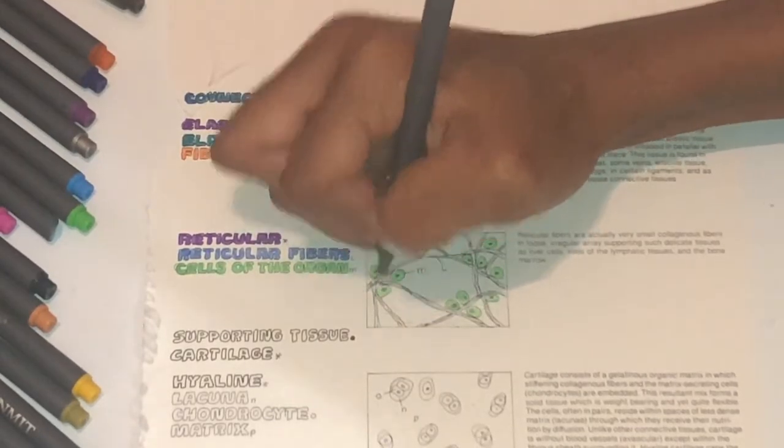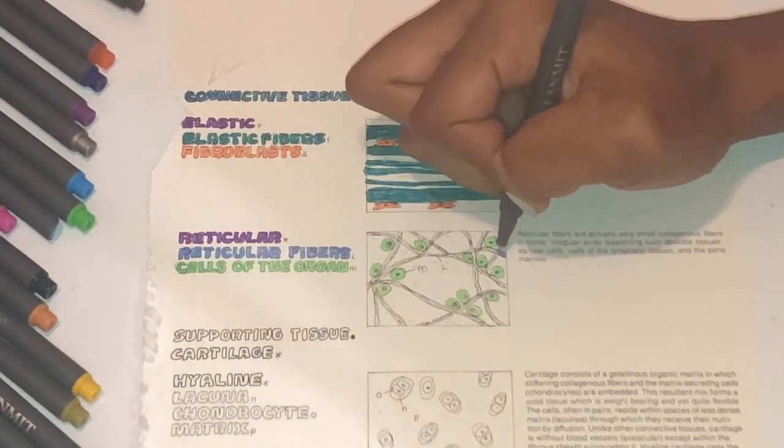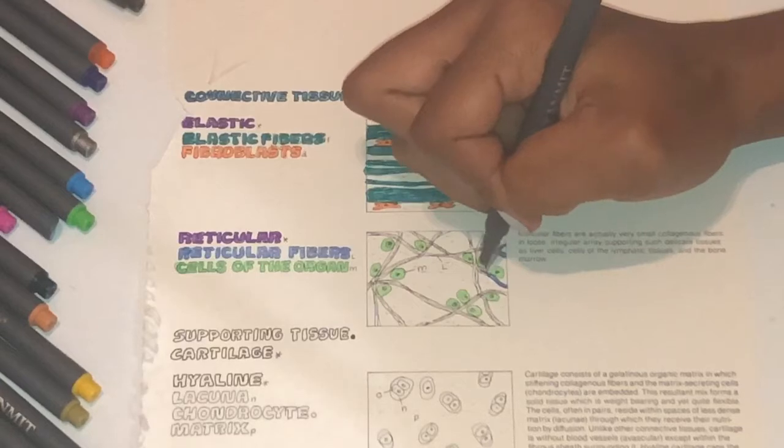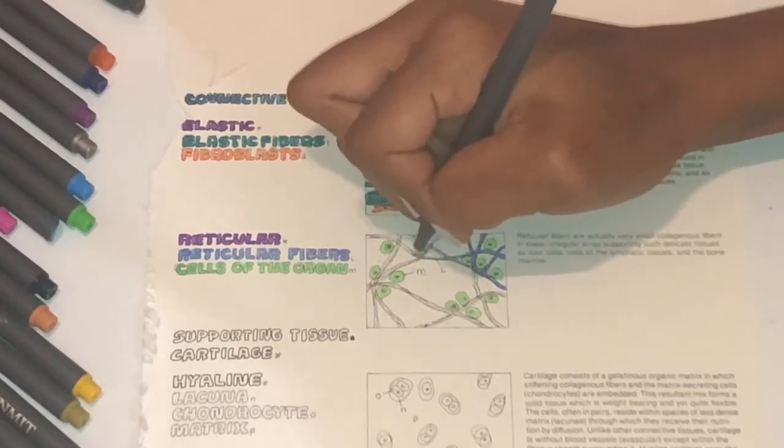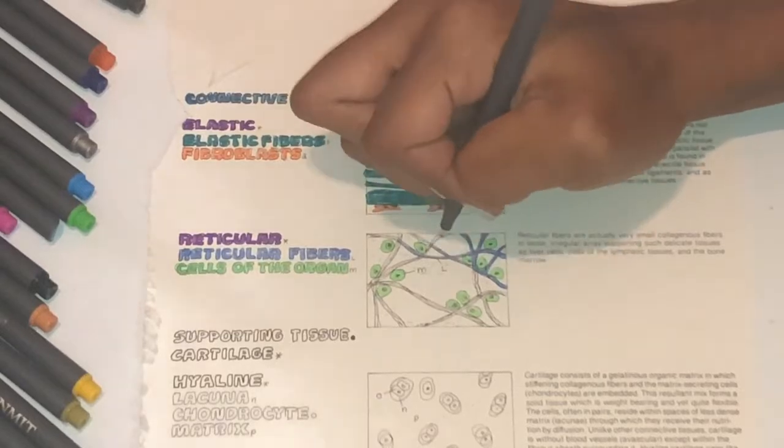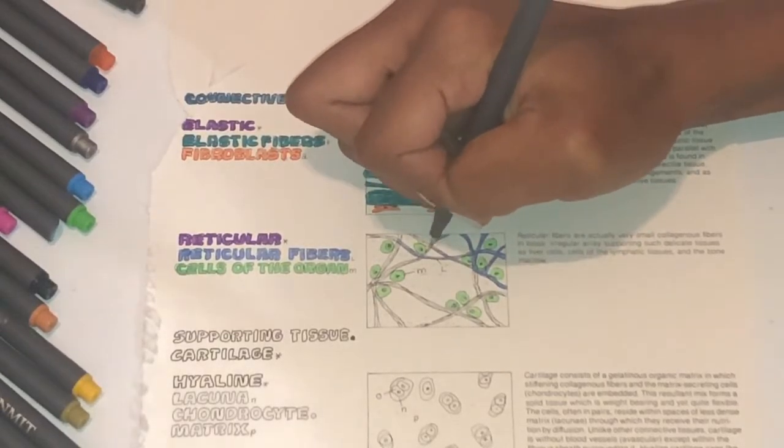Reticular fibers are actually very small, collagenous fibers in loose, irregular array supporting such delicate tissues as liver cells, cells of the lymphatic tissues, and the bone marrow.